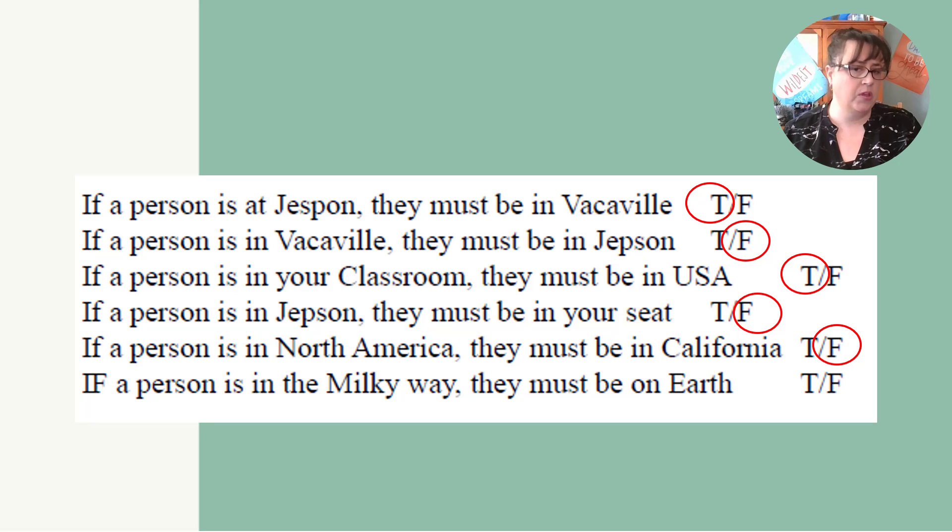If a person is in the Milky Way, then they must be on Earth. Well, that's false. So far, we think Earth is the only place where there's people, but there might be someplace else. We don't know, but the Milky Way contains the Earth, right? But there's also other planets within the Milky Way. There's Mars, Pluto, maybe, maybe not, depending on the year.